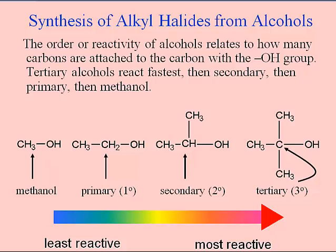The other thing that matters is the nature of the alcohol — in particular, how many carbons are attached to the carbon that has the OH group. We can classify alcohols according to four types. Methanol is kind of in a class by itself, but there are lots of different primary alcohols — primary because the carbon with the oxygen on it has just one other carbon attached to it, and this little degree symbol refers to that. Secondary alcohols have the carbon attached to two other carbons — it's the carbon with the oxygen that we're focusing on, where the arrow is pointing. Tertiary alcohols have three carbons attached to the carbon that has the oxygen.